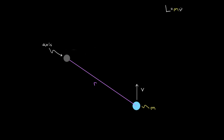M times v would just be regular momentum, so we multiply by r and also by sine of theta, where theta is the angle between the velocity and the r vector. Technically, r goes from the axis to the mass, and because we're taking sine, and the supplementary angles have the same sine value, you're safe taking any angle between v and r to get the right answer. So the full formula is L = mvr sinθ.